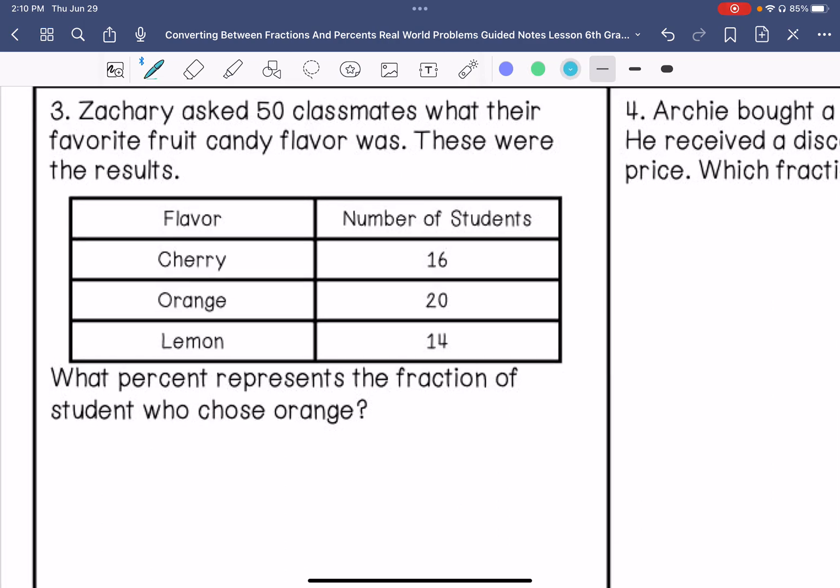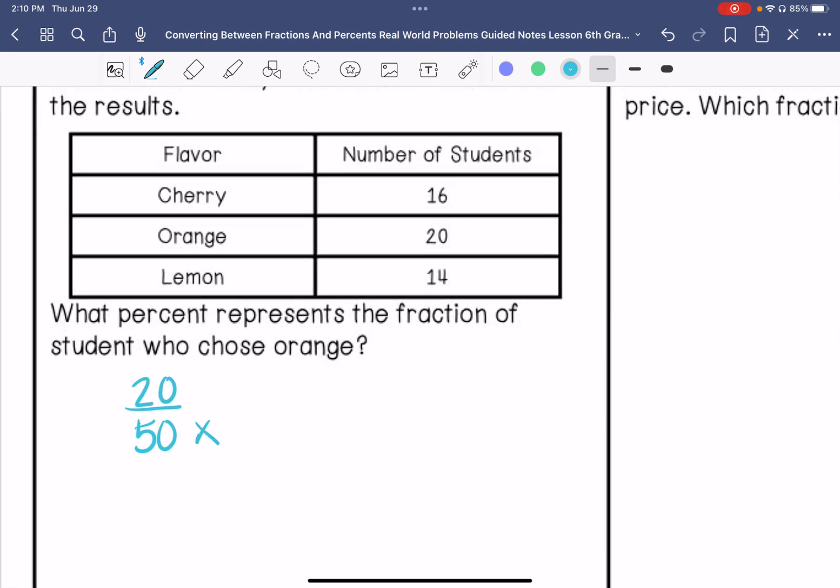Number three. Zachary asked 50 of his classmates what their favorite fruit candy flavor was. These are the results. What percent represents the fraction of students who chose orange? So 20 out of 50 chose orange. We're going to get that to percent. So that is equivalent to 40 percent.